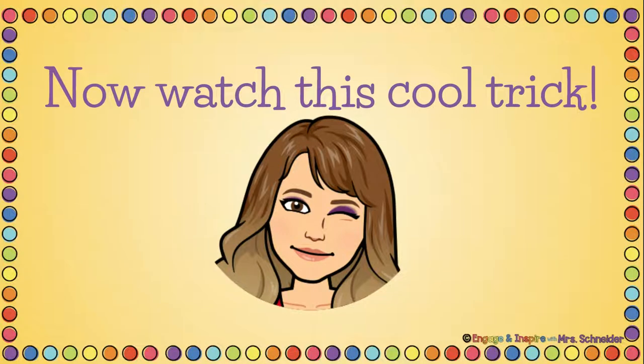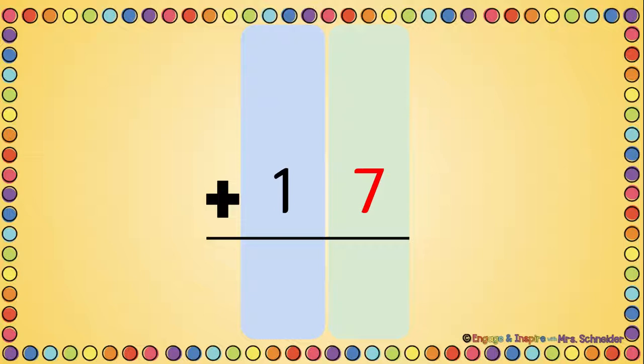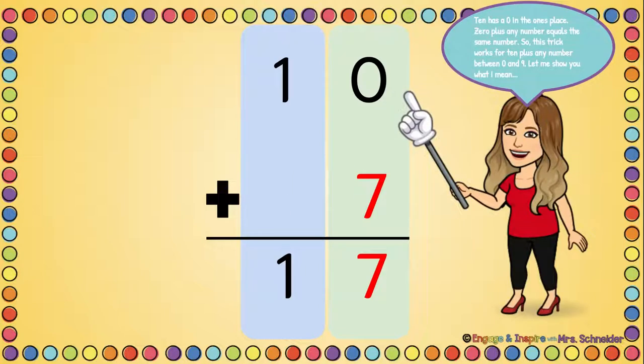Now watch this cool trick. Are you ready? 10 has a 0 in the ones place. 0 plus any number equals the same number. So this trick will work for any number that we're adding between 0 and 9. See? So 10 plus 7 equals 17. Let me show you what I mean.